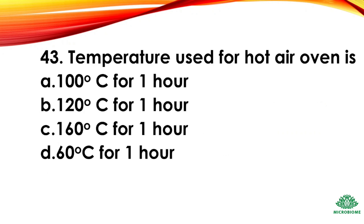Question 43: The temperature used for a hot air oven is — options: 100°C, 120°C, 160°C, 60°C. The right answer: option C, 160°C.